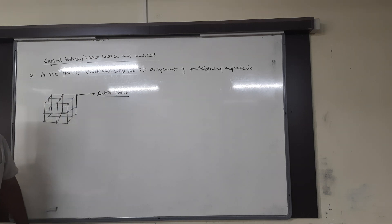BCC — calculation of number of particles per unit cell. In BCC, particles are present at corners and at the center of unit cell. Corner particles: 8 × (1/8) = 1. Center particle: 1 × 1 = 1. Therefore, n = 1 + 1 = 2. The effective number of atoms in BCC is 2.